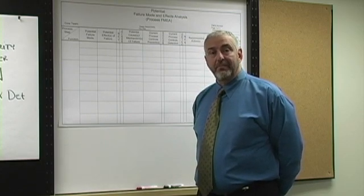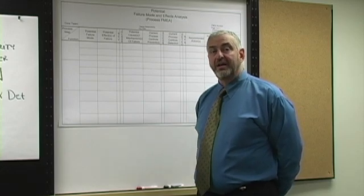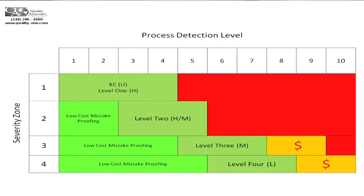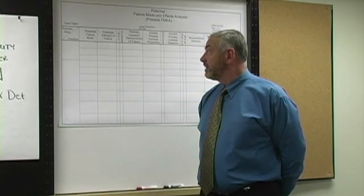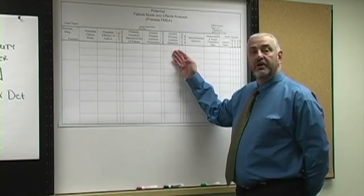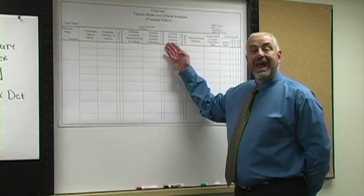And then third, I come back to the FMEA and look at the detectability of us finding those particular causes of failure that have high probability. That is to say, for any occurrence number high enough to be in criticality zone two or possibly in three, we would then try to take an action to reduce the probability.